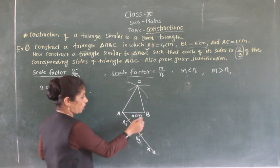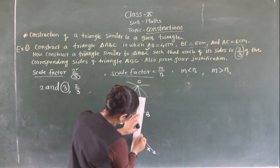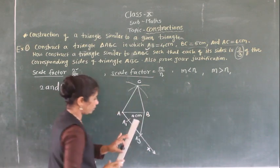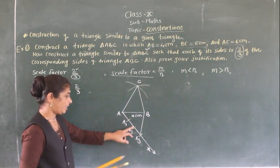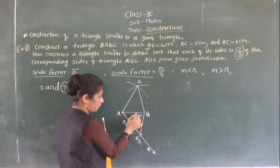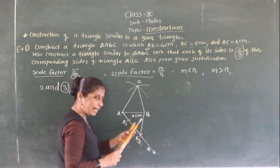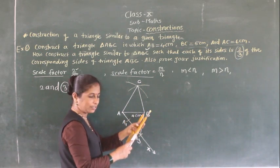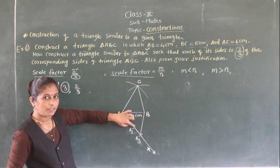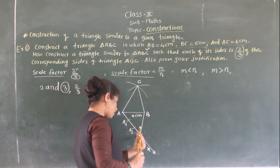The next step is to join B and A3. Then from point A2, draw a line parallel to A3B. This gives you point B dash on AB. So line A2B dash is parallel to A3B.